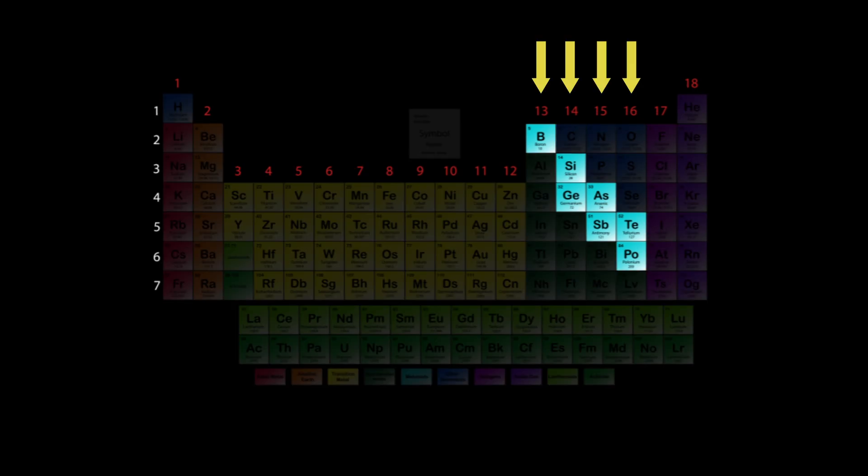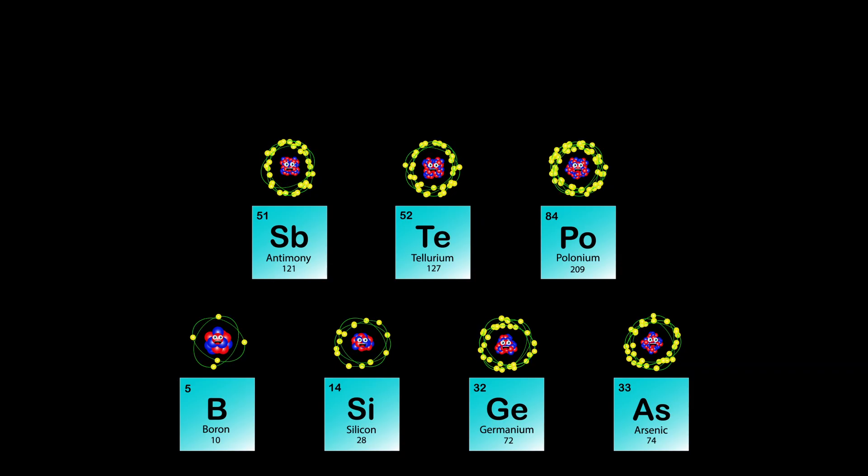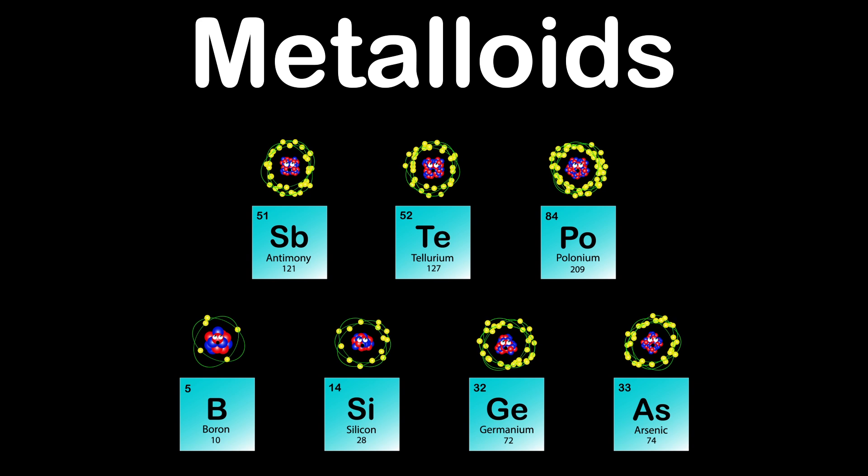We are the Metalloids of the Periodic Table. Groups 13 through 16 and periods 2 through 6 is where you find us in the Periodic Table Mix. We are the Metalloids of the Periodic Table.